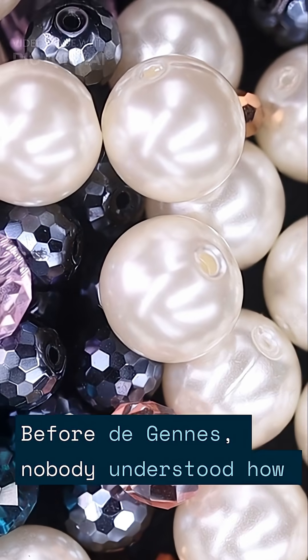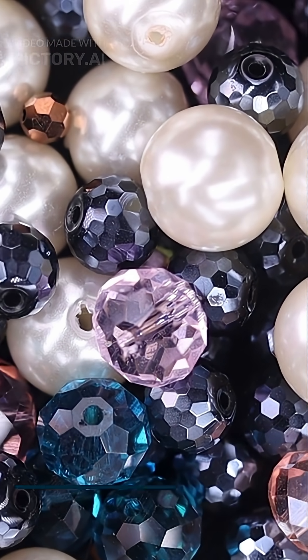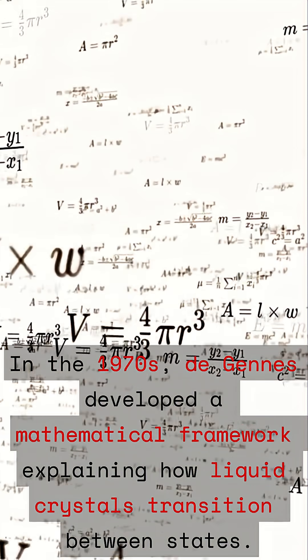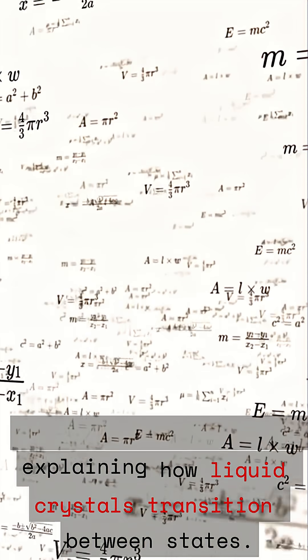Before de Gennes, nobody understood how they worked. In the 1970s, de Gennes developed a mathematical framework explaining how liquid crystals transition between states.